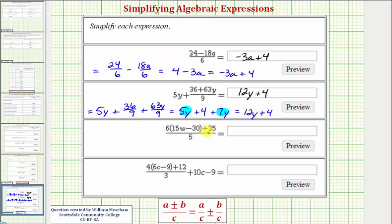Looking at our next expression, we first want to simplify the numerator by distributing the 6 here. So we would have 6 times 15w, that's 90w. And then 6 times negative 30 is negative 180. So we have minus 180. And then we still have plus 25. All this is divided by 5.